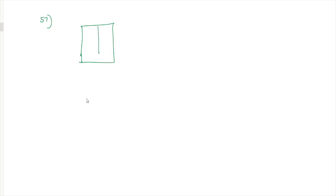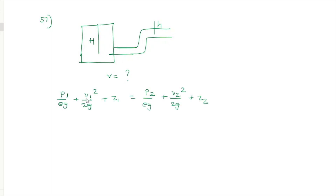A gate-style fluid mechanics question involves a tank with a pipe lower than the water height. Applying Bernoulli's equation with z1 = H (tank height), v1 ≈ 0 (stagnant fluid), z2 = 0, and v2 unknown, we get: v2 = √(2gH). This is a standard gate problem.